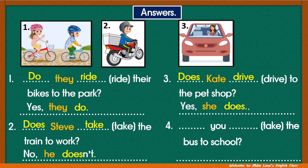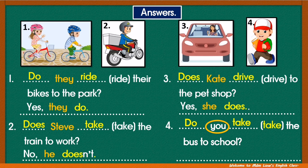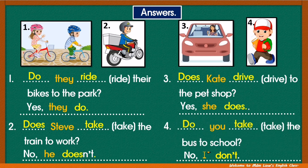Number four: look at the subject — you. Special subject, right? We need to use do, and the verb in the base form: take. Do you take the bus to school? Looking at the picture — no, right? We need to change you to I, followed by don't. No, I don't. Question: Do you take the bus to school? Answer: No, I don't.